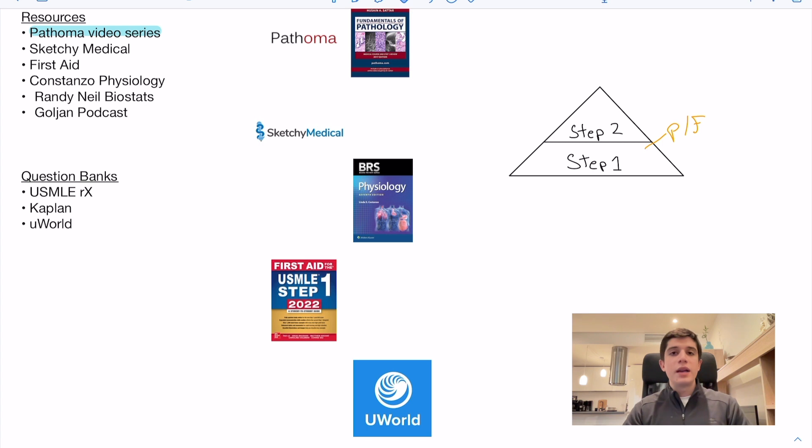Pathoma is great in that it comprises a lot of the high-yield pathology topics that will be seen on the exam and that comprise majority of the topics seen on Step 1. He also makes it very easy to understand and relates and refers to the booklet that comes with the subscription. So I would follow along his presentations and take notes in the book and highlights so I can refer to them later on.